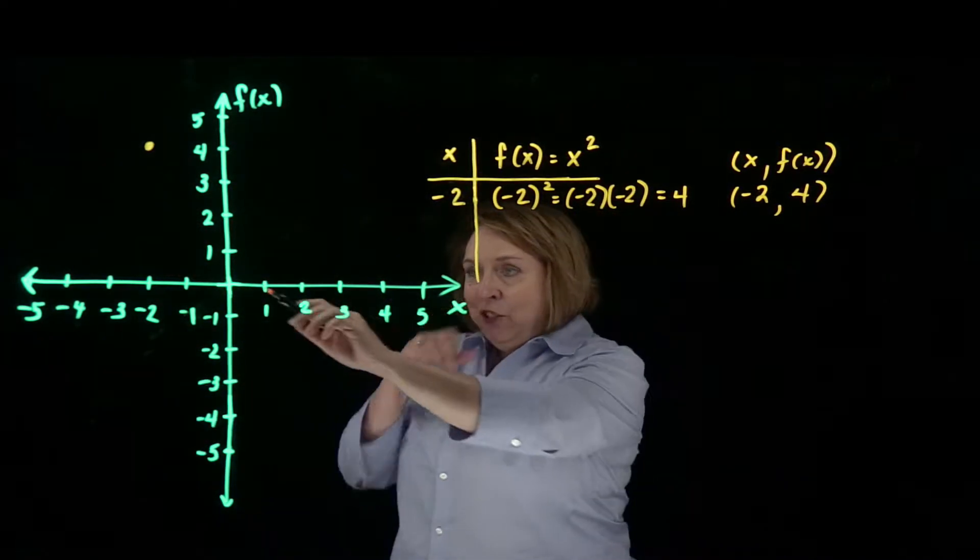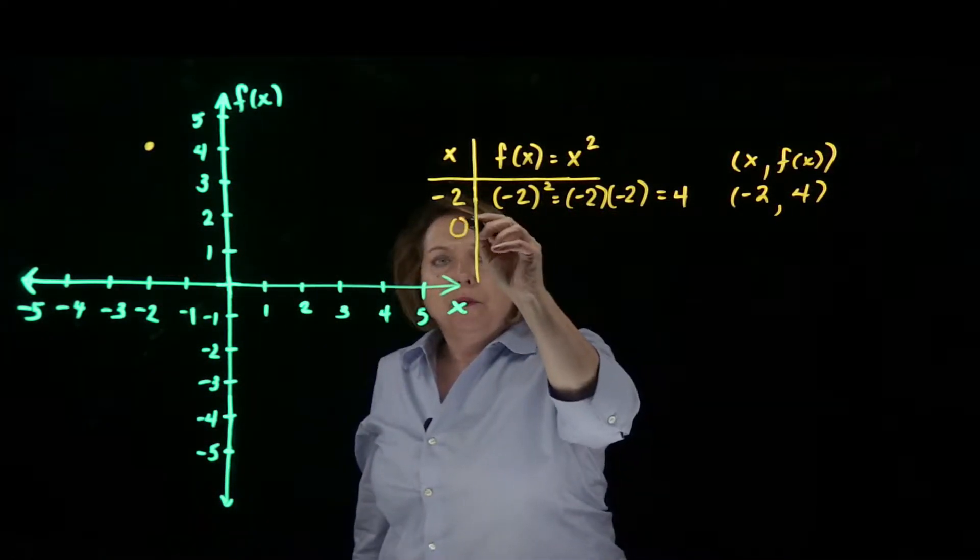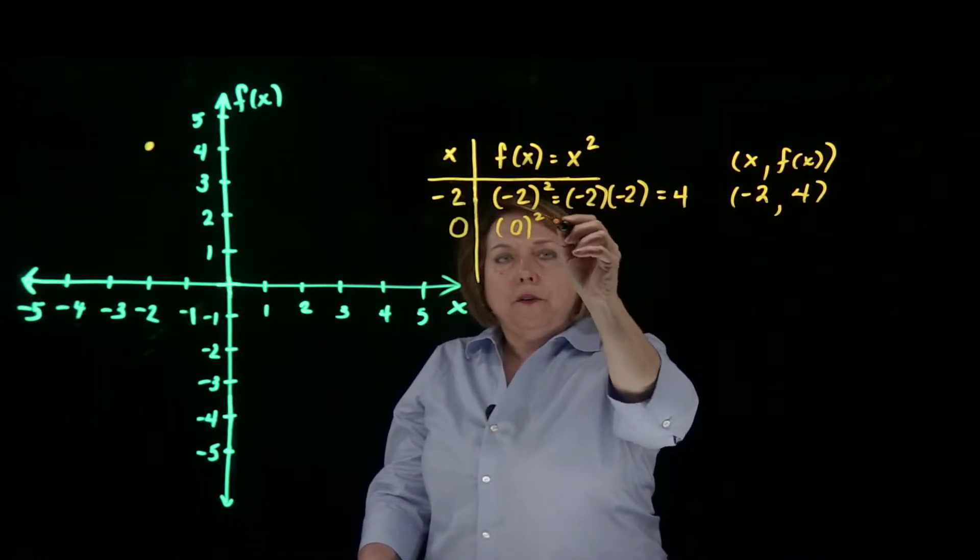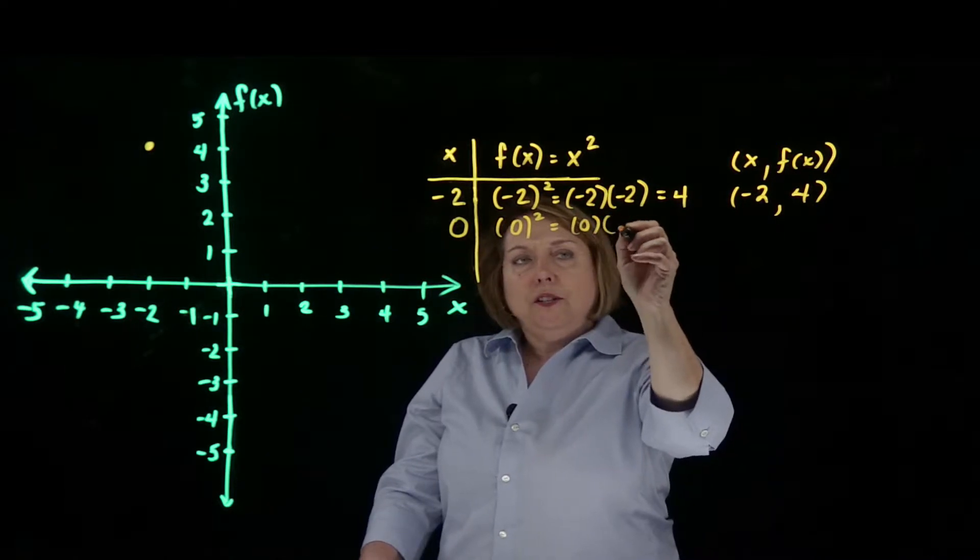Let's go ahead and choose our origin, 0. 0 squared is just 0 times 0, which is 0.